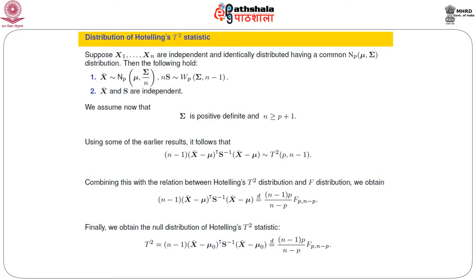More importantly, exactly as in the univariate setup, X-bar and S are independent. Now, the expression for the Hotelling T-square statistic involves the inverse of the S matrix. We have seen that S has a Wishart distribution, and for a Wishart distribution we can talk about its inverse provided the degree of freedom is sufficiently large — that means n − 1 ≥ p — and the scale matrix is positive definite. So we assume σ is positive definite and n ≥ p + 1.